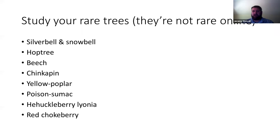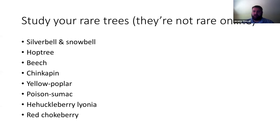Three sumacs with pinnately compound leaves: poison sumac, winged sumac, and smooth sumac. If it's got the winged rachis — winged sumac, done. If it doesn't have a winged rachis, it's either poison sumac or smooth sumac. Look at the leaflet margins: if they're smooth, it's poison sumac; if they're serrated, it's smooth sumac. Poison sumac is also site-specific — you're only going to find it in seeps on sandy baygall sites.